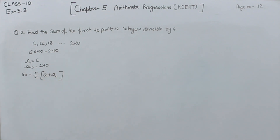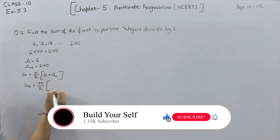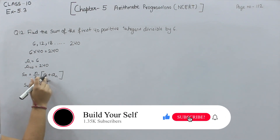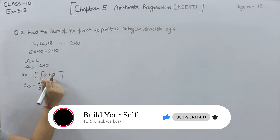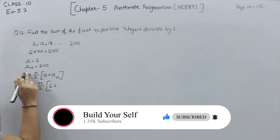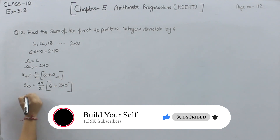Now we write S40 = (40/2)(A + A40). The first term A is equal to 6, and A40 is equal to 240.